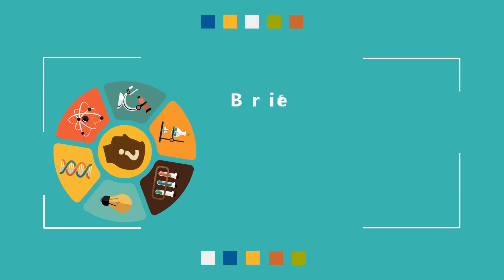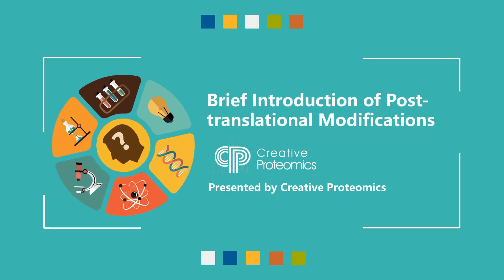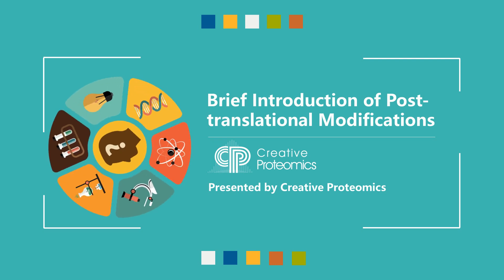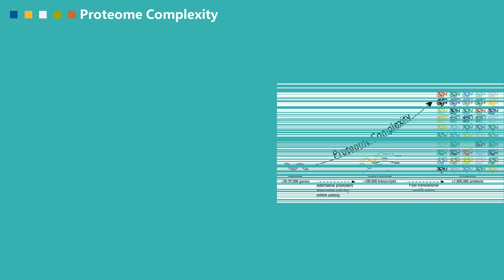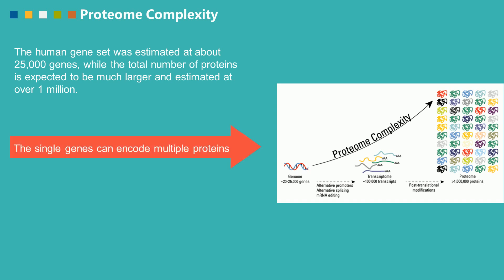Hello, welcome to Creative Proteomics' video. Today we are going to briefly introduce post-translational modifications. As we know, the human gene set was estimated at about 25,000 genes, while the total number of proteins is expected to be much larger, estimated at over 1 million. A single gene can encode multiple proteins in addition to alternative splicing.